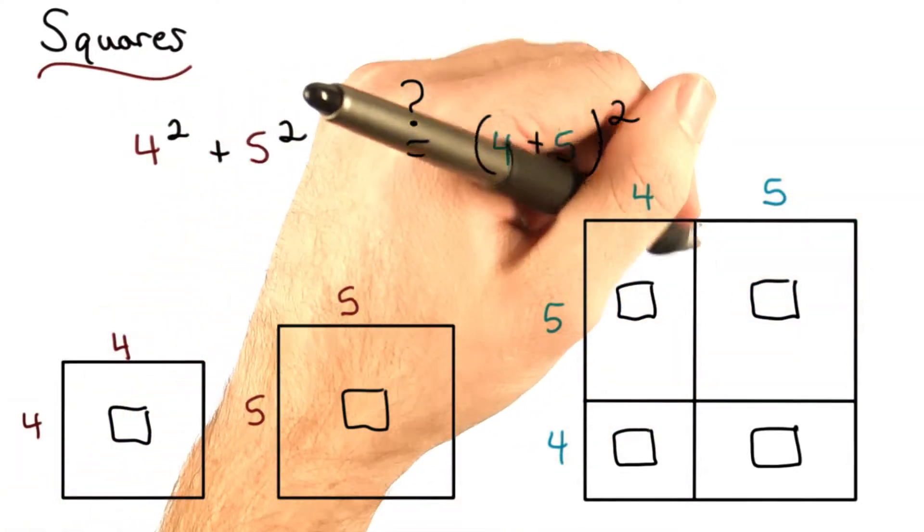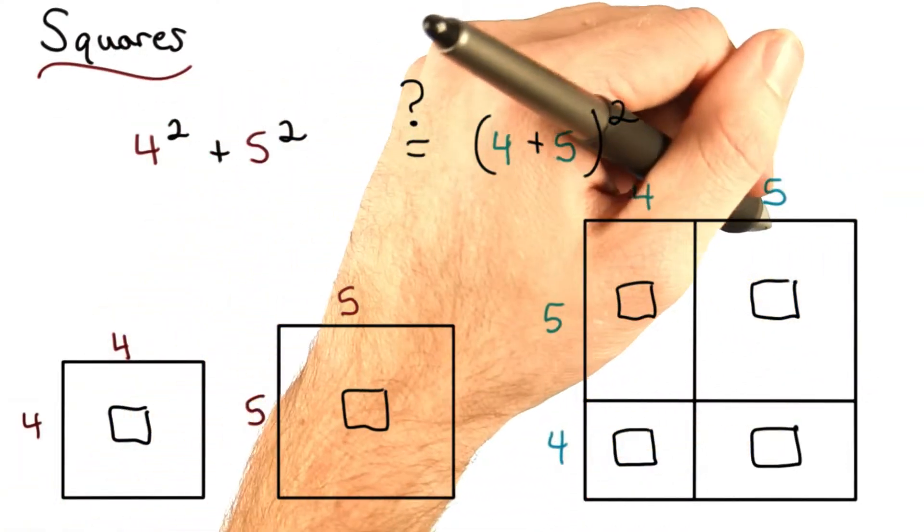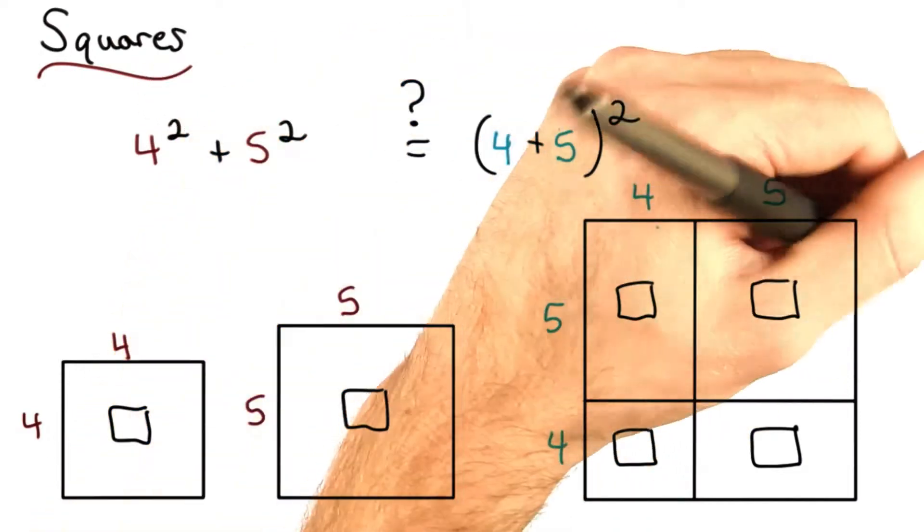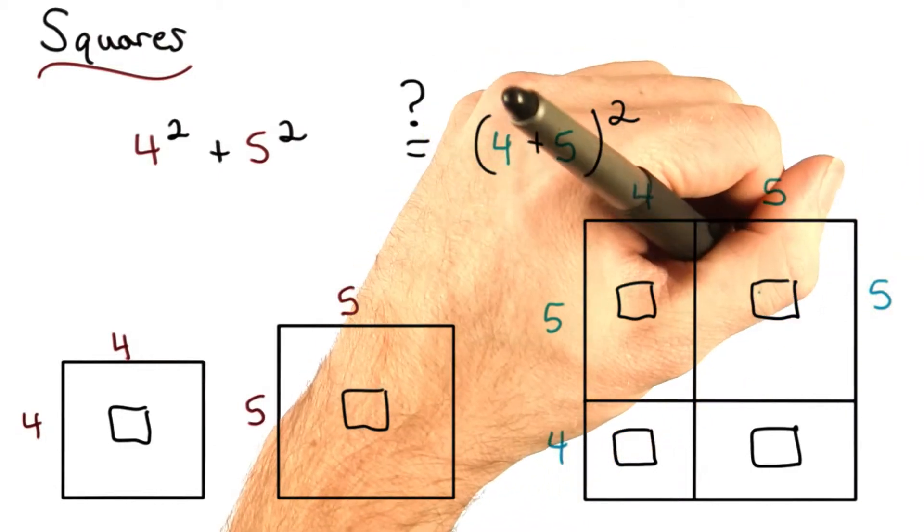For example, to find the area of this part, I know that this side is 5, and I know that this side is the same as this side, which is the same as this side. So, 5 times 5, or 25.